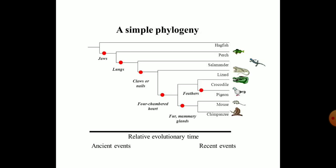Here is an example showing how fishes, lizards, reptiles, birds, and mammals are arranged in a simple phylogeny tree. Jaws mark the difference between hagfish and other groups like salamanders, perch, and those with lungs, giving rise to amphibians. Later, claws and nails differentiated reptiles, and a four-chambered heart — seen in crocodiles — distinguished certain reptiles. Feathers differentiated birds from reptiles, while mammary glands and fur distinguished the various types of mammals.